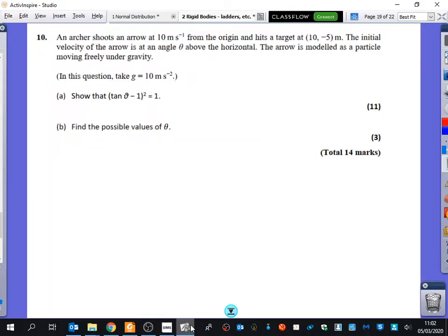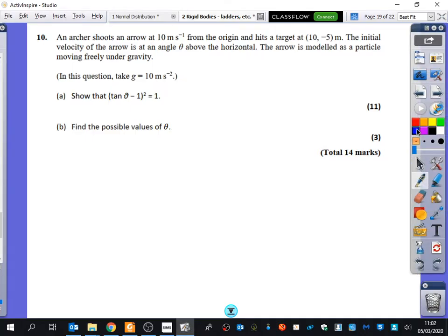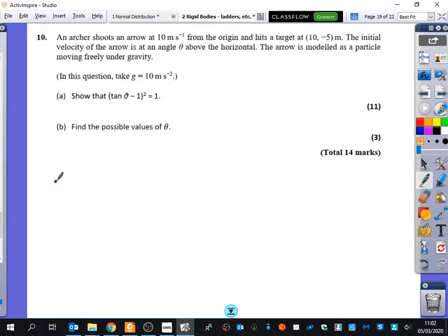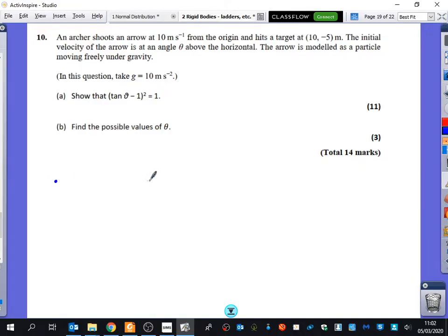This question here. I haven't looked at this yet, so this will be fun for me. So projections - an archer shoots an arrow at 10 metres per second from the origin and hits the target at 10 minus 5. So there's 10, there's minus 5.